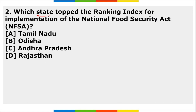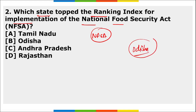Next MCQ: Which state topped the ranking index for implementation of the National Food Security Act (NFSA)? For larger states, Odisha topped while Goa was last. For smaller states and union territories, Tripura topped and Ladakh was last. The correct answer is Odisha.